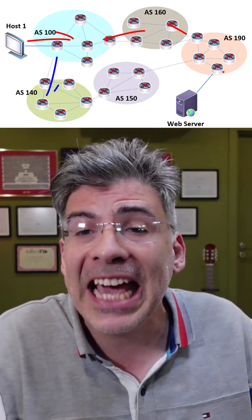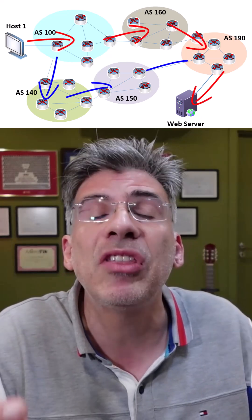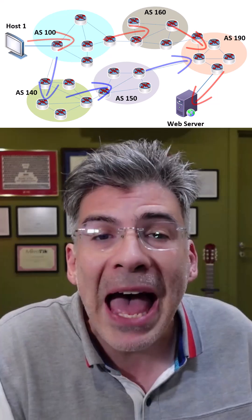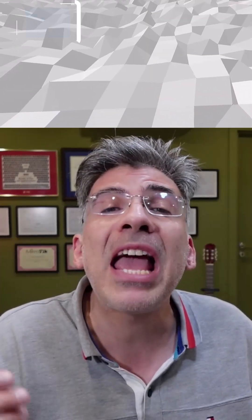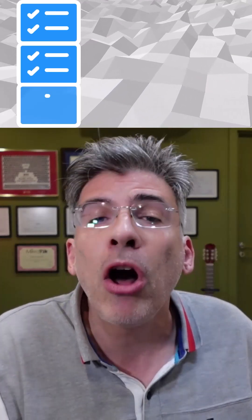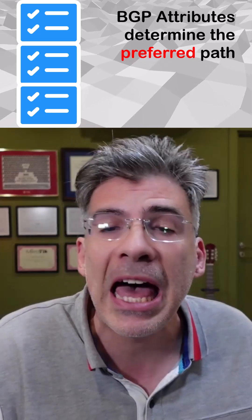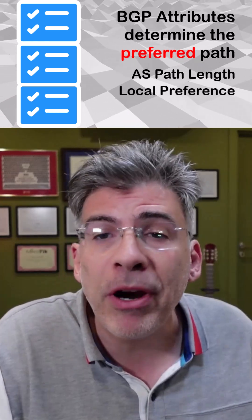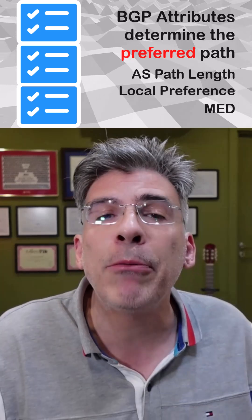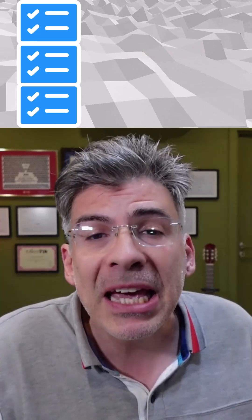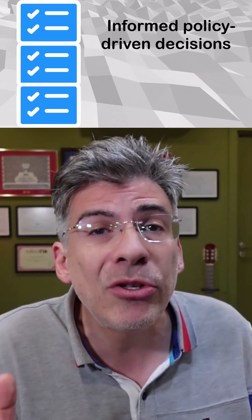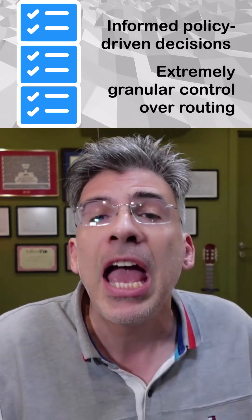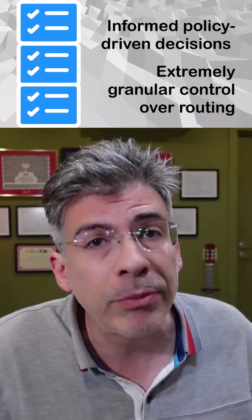BGP doesn't simply route traffic using the shortest path, but uses a whole series of parameters called attributes to determine the preferred path. Attributes can include things like AS path length, local preference, and MED, all of which allow BGP to make more informed, policy-driven decisions, giving network administrators extremely granular control of routing behavior.